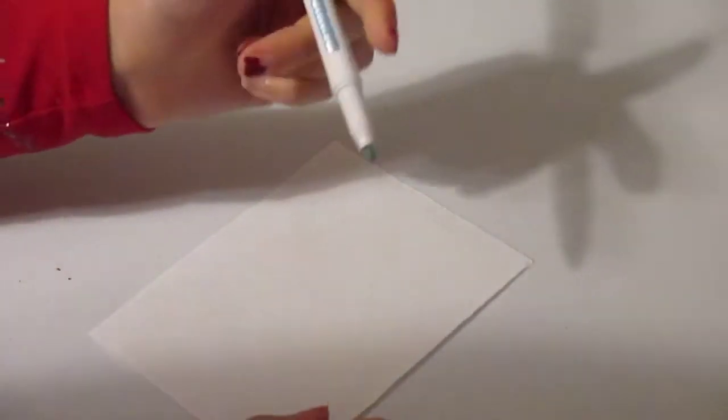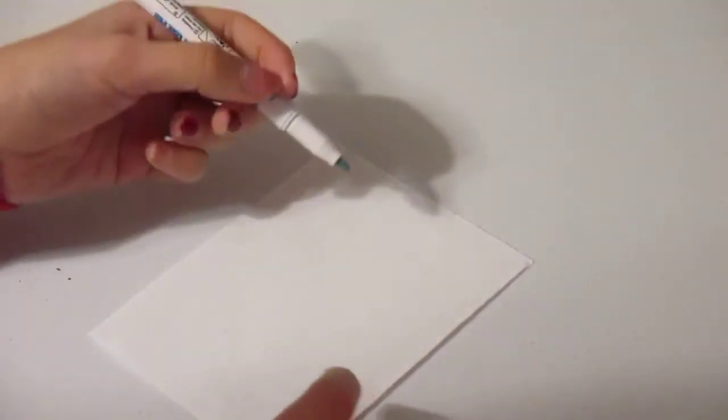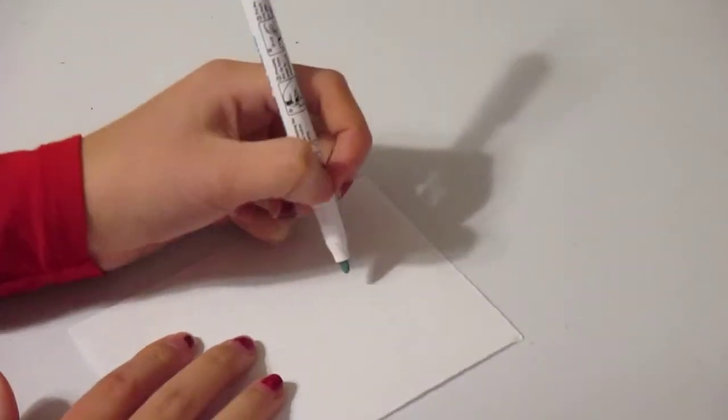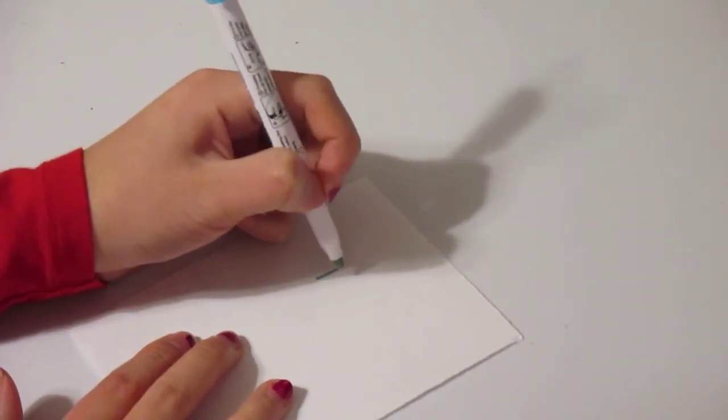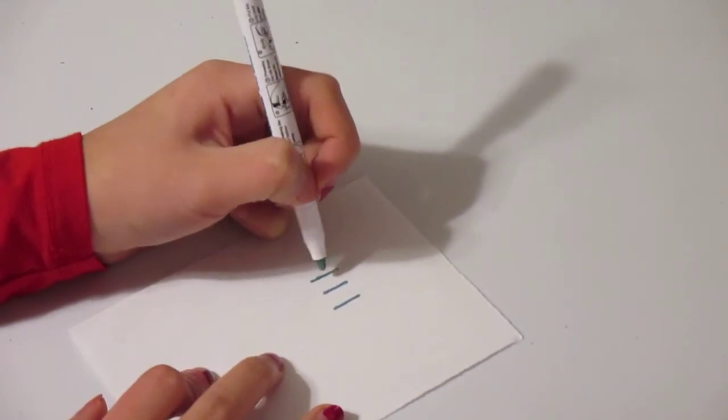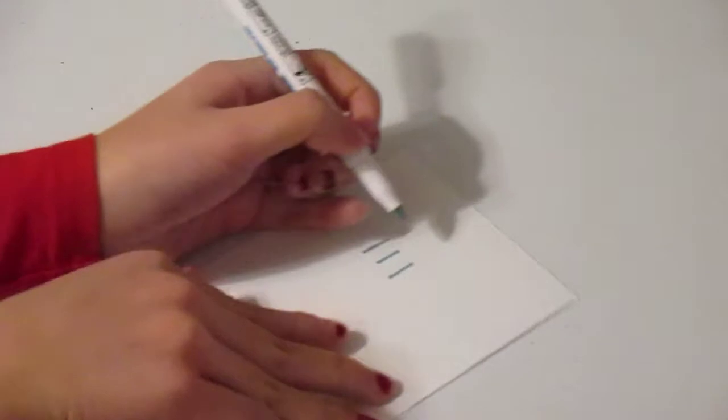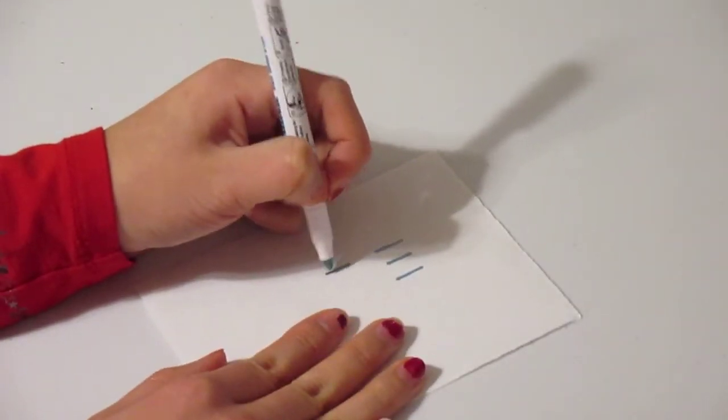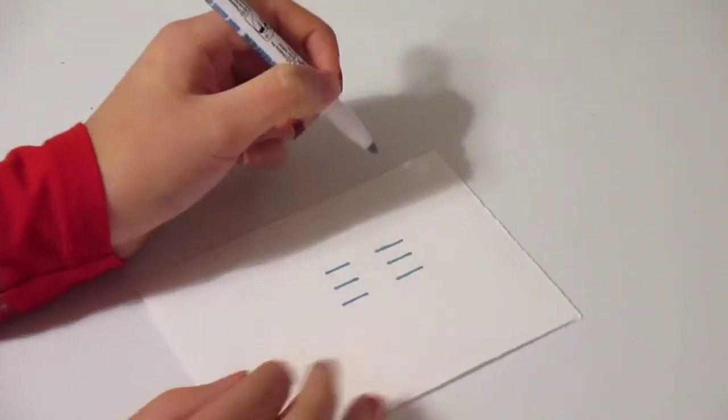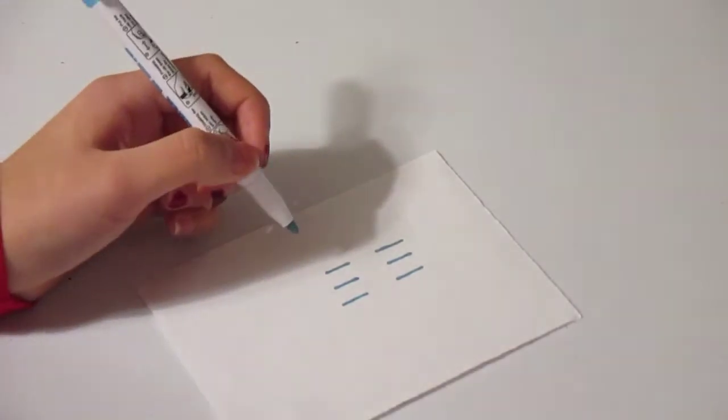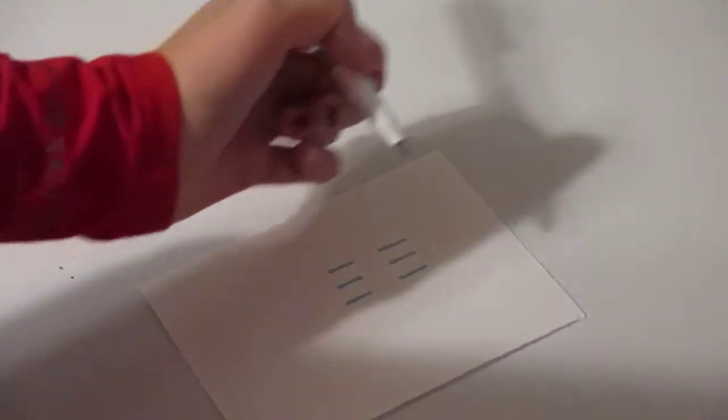So starting with your marker, pen, pencil, whatever you're drawing with. Start with 3 lines. Try and make them parallel to each other and right next to each other just like that. And now make 3 lines on the bottom. And do the same thing and try to get them right under the 3 lines you drew.